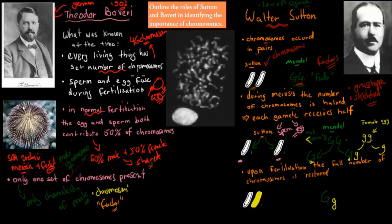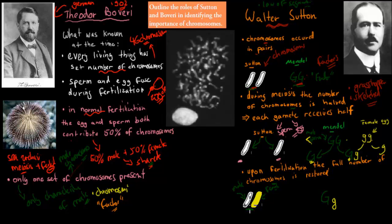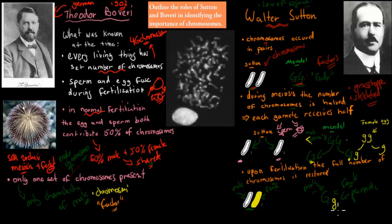Sutton also realized that upon fertilization, the full number of chromosomes is restored. One chromosome comes from the father and one from the mother, restoring the original pair — just as with Mendel's Punnett squares, where the offspring gets one allele from the male and one from the female. The newborn is a combination of the two.